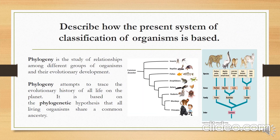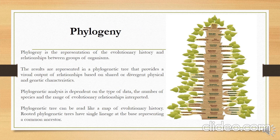Now let us describe how the present system of classification of organisms is based. This is what we call phylogeny — the study of relationships among different groups of organisms and their evolutionary development. There is an attempt to trace the evolutionary history of all life on the planet, based on the phylogenetic hypothesis that all living organisms share a common ancestry. Phylogenetics is important because it enriches our understanding of how genes, genomes, and species evolve.